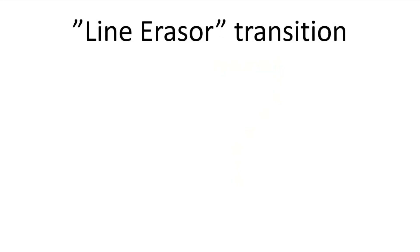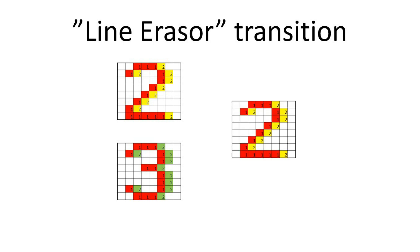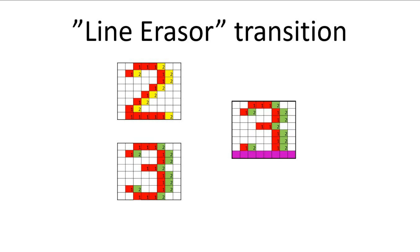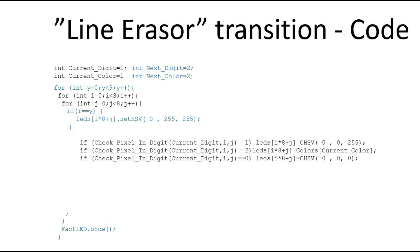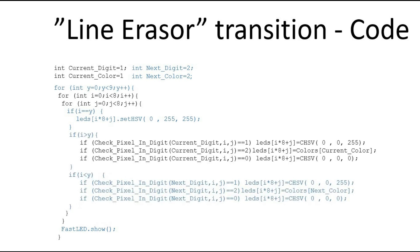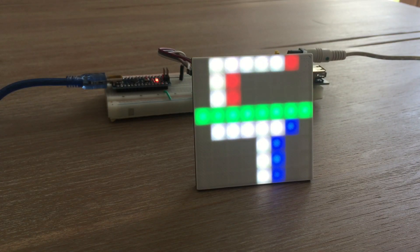In the line eraser transition, a horizontal line moves across the display from top to bottom, erasing the current digit and revealing the next one. For this transition we introduce a new set of variables for storing the value of the next digit to display and its color. In the code we start with our standard nested for loop and add a third for loop to it. Each time the code within this loop executes, depending on the value of the y variable, we either display pixels belonging to the current digit, draw a line of green pixels making the eraser line, or draw pixels belonging to the next digit. Here is how this transition looks on the display.